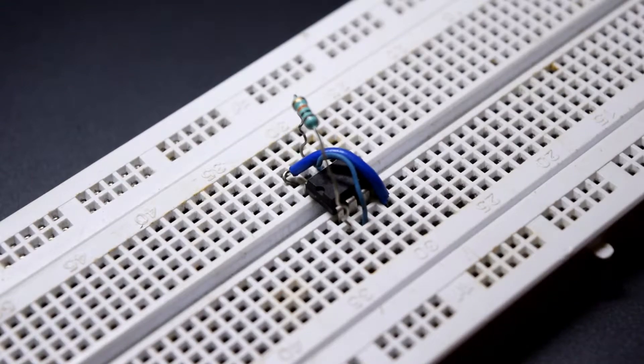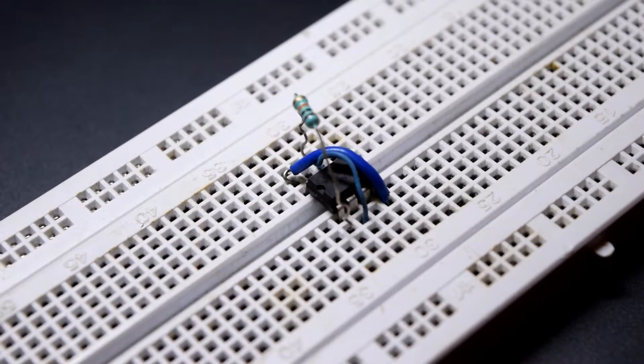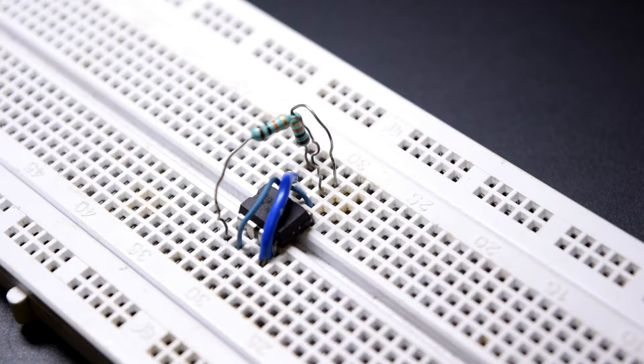Now insert a 10K ohms resistor between pin 1 and pin 6 of the timer. The next step is to connect another 10K resistor between pin 6 and pin 8 of the IC.